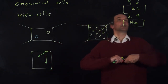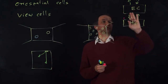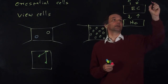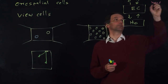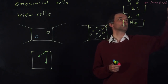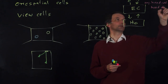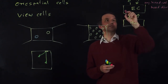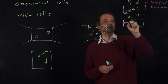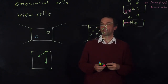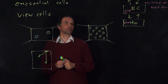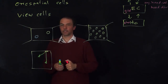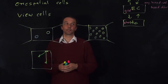To summarize: we have the entorhinal cortex and the hippocampus. Angular head velocity cells and head direction cells are outside of these structures. Grid cells are in the entorhinal cortex, and place cells are in the hippocampus. That concludes my overview of aureospatial cells, mainly in rodents and partly also in monkeys. Thank you.